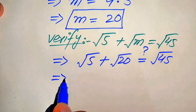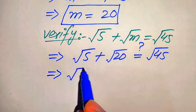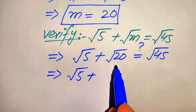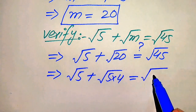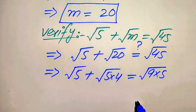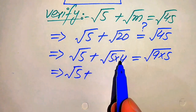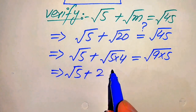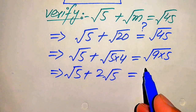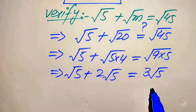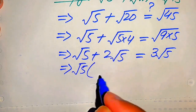We do some simplification on both sides. On the left hand side, we write square root of 5 and we break 20 as 5 times 4. On the right hand side we break 45 as 9 times 5. So we have √5 plus √(4×5) equals √(9×5). Since √4 = 2 and √9 = 3, this becomes √5 plus 2√5 equals 3√5.